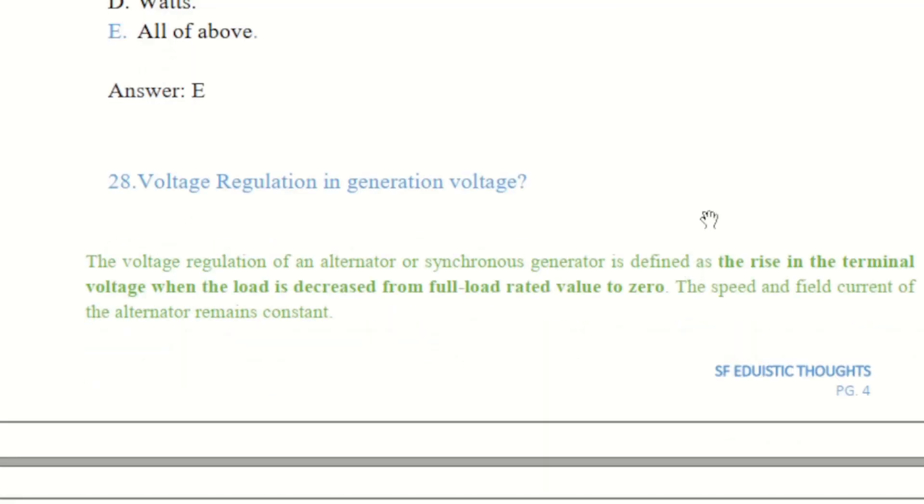Question number 28 is asking about the voltage regulation in the generation voltage. The voltage regulation of an alternator or synchronized generator is defined as the rise in the terminal voltage when the load is decreased from full load rated value to zero. The speed and field current of the alternator remains constant.